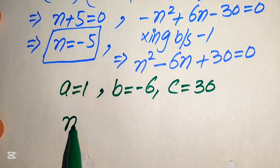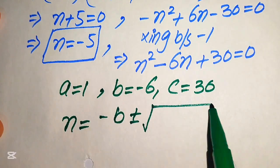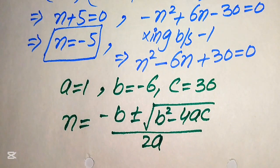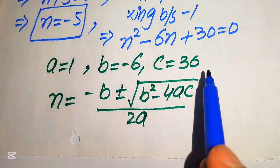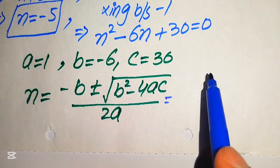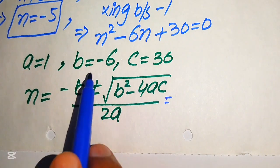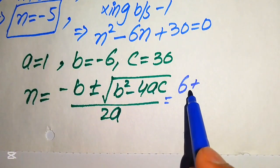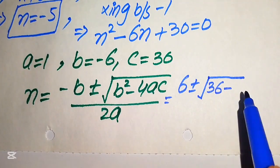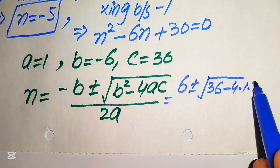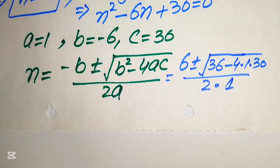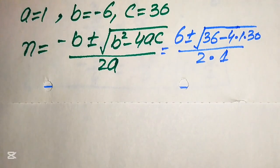We apply the quadratic formula: n equals minus b plus or minus the square root of b squared minus 4ac, all divided by 2a. Substituting the values: minus b is minus of minus 6, which becomes plus 6, plus or minus the square root of (minus 6) squared minus 4 times 1 times 30, divided by 2 times 1.